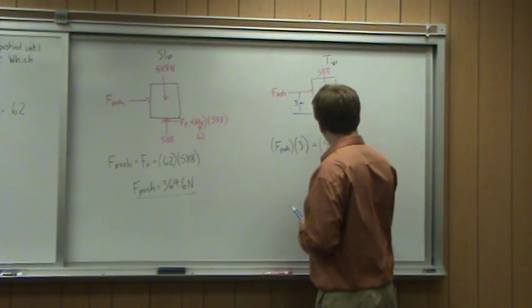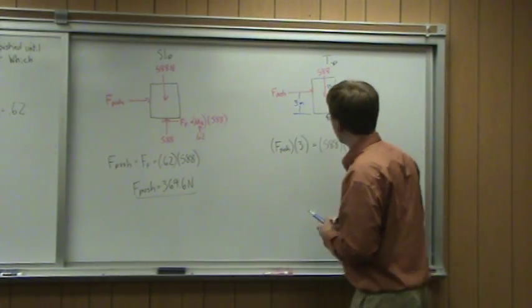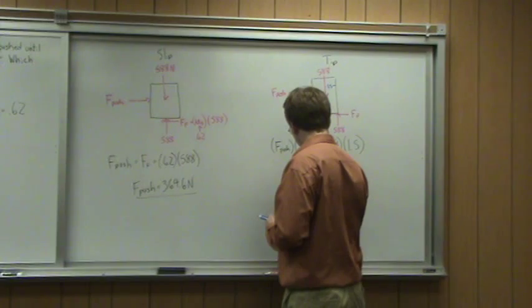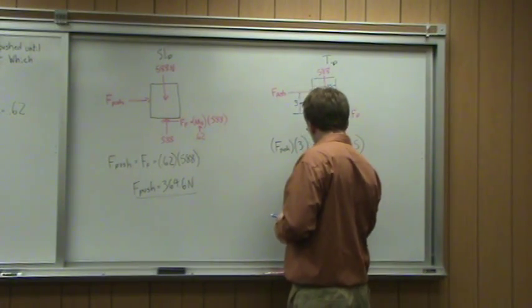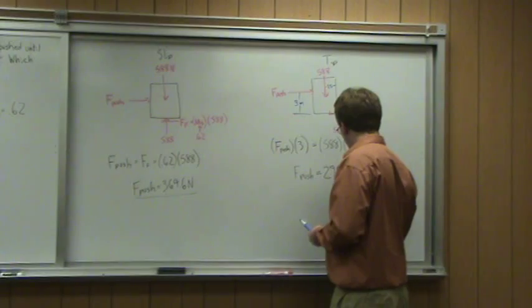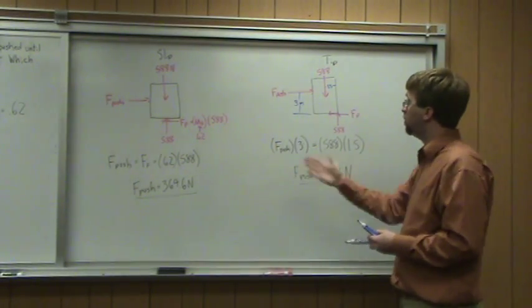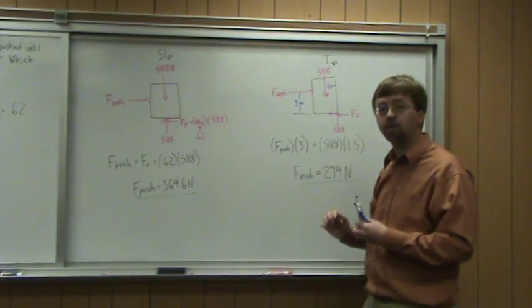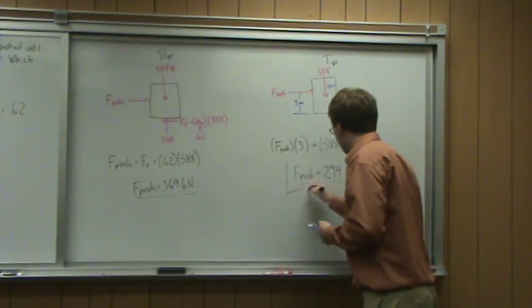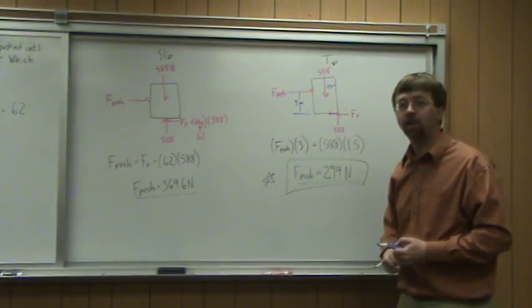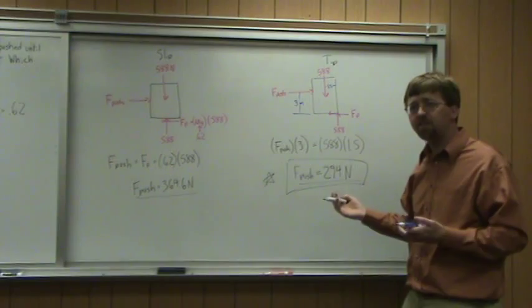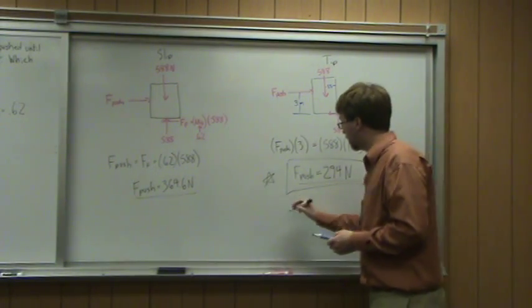So those two moments are balanced: F push, which equals FF, times 3 meters equals 588 newtons times 1.5 meters. Solving for F push by dividing both sides by 3, I get a value of 294 newtons. Looking at both options: it takes 364.6 newtons to start sliding, and 294 newtons to start tipping. Since 294 is the lower value, that happens first. The answer is: it will tip first.